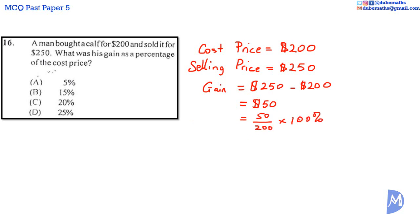Canceling: 100 into 100 gives 1; 100 into 200 gives 2; 2 into 2 gives 1; 2 into 50 gives 25. This is equal to 25%. The answer is D.